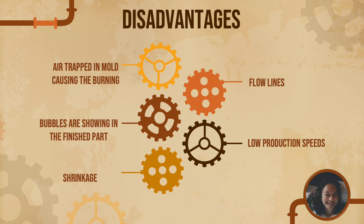The second disadvantage is bubbles showing in the finished part, which usually happens due to moisture. Next is shrinkage, which occurs due to not enough plastic for molding. Flow lines usually occur on the product surface where there are marks due to unbalanced flow of molding material in the gates and runners. They are caused by varying speeds at which the molding plastic flows as it changes direction through the contours and bends inside the mold tool.